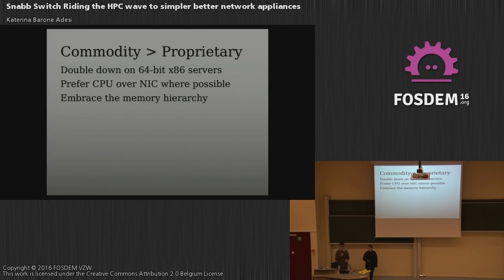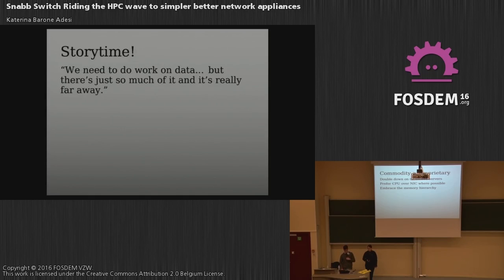Another way we choose commodity over proprietary: we don't want to rely on proprietary hardware functionality. We want to rely on Xeon servers, because that is the definition of commodity computing. We're going to prefer to do things on the CPU over doing things on the NIC, and that means embracing the architecture of the modern Xeon system.